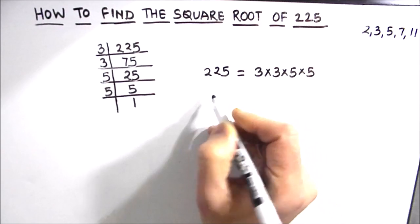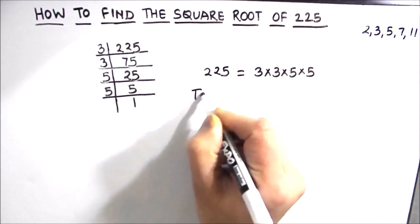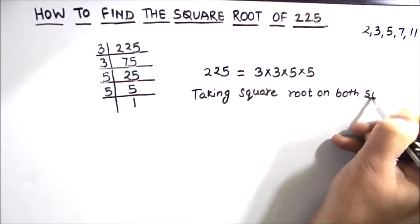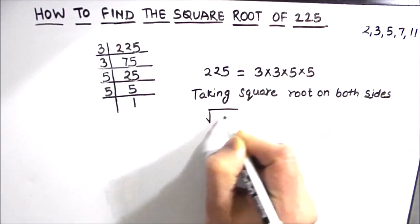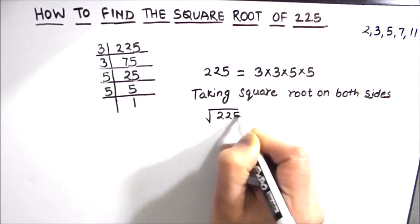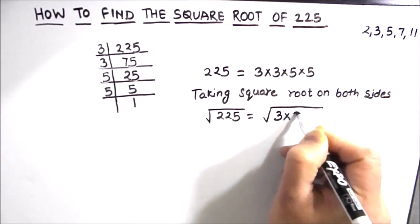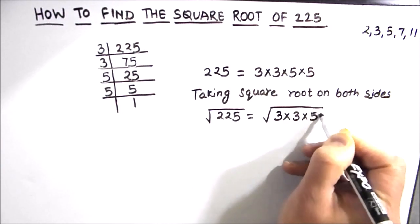To find the square root we are going to take the square root on both the sides. So square root of 225 is equal to square root of 3 times 3 times 5 times 5.